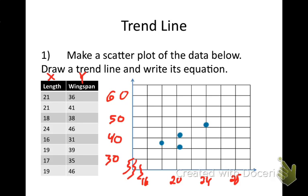I go through and plot every coordinate: 16 and 31, 19 and 39, 17 and 35, 19 and 46. Once the scatter plot is done, just based on this information alone — what type of correlation do we have? That would be a positive correlation, it's going up. So that's a positive correlation.